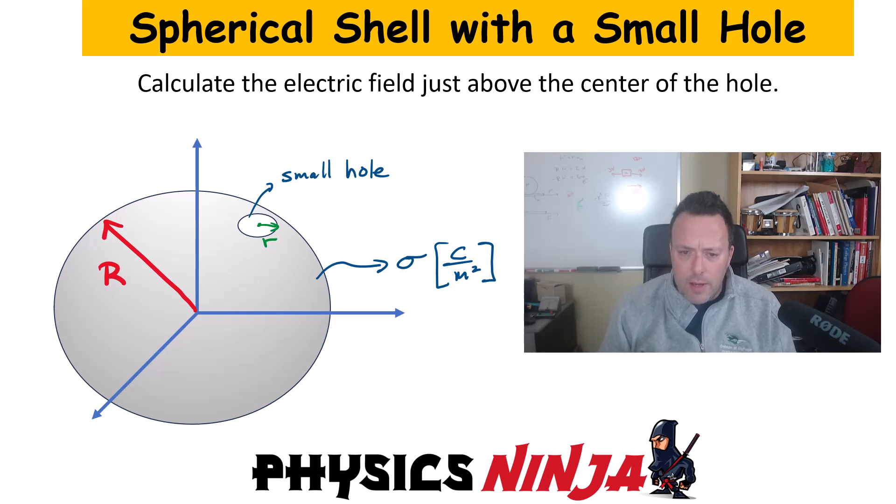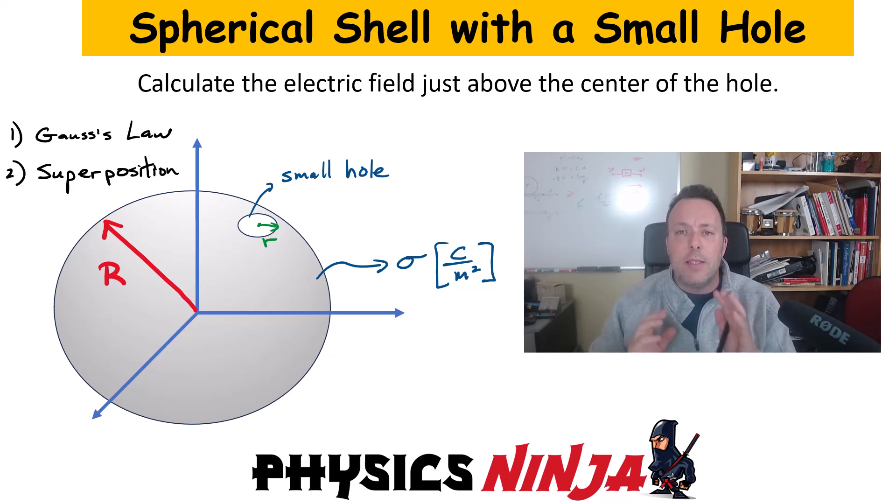All right, so here's the setup for the problem. What we're going to do now is use Gauss's Law. But how do you use Gauss's Law in this case where you don't have kind of nice spherical symmetry? So in order to do this problem, we're also going to have to use superposition. So I'm going to show you how to set this problem up and get to that solution.